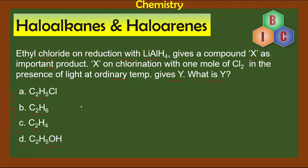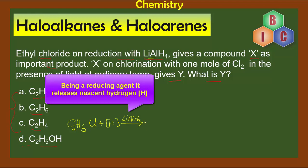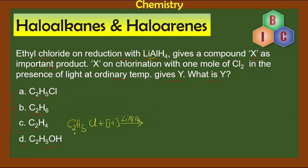Many of you would have already found the answer, but for those who didn't, let's go through the explanation. First, let's write the equation: ethyl chloride is subjected to reduction with lithium aluminium hydride, LiAlH₄. It releases nascent hydrogen, and C₂H₅ takes up this H.